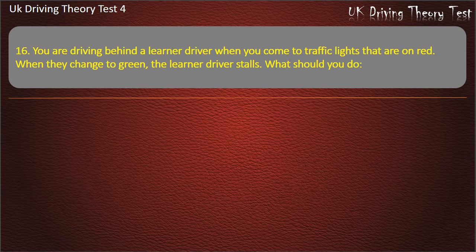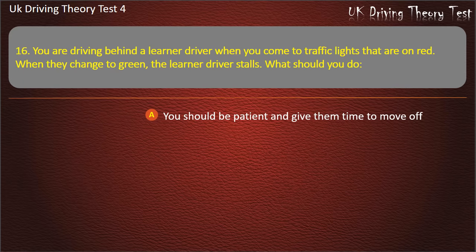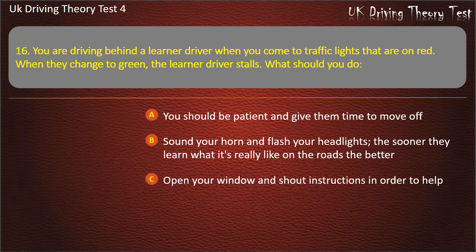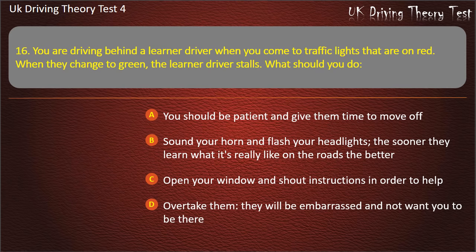Question 16. You are driving behind a learner driver when you come to traffic lights on red. When they change to green, the learner driver stalls. What should you do? Be patient and give them time to move off; sound your horn and flash your headlights; open your window and shout instructions; or overtake them. Answer: You should be patient and give them time to move off.